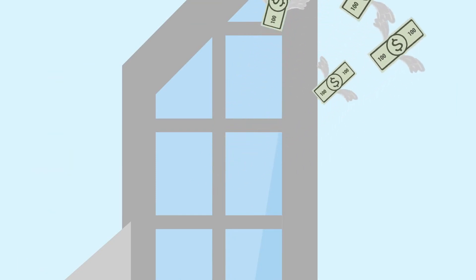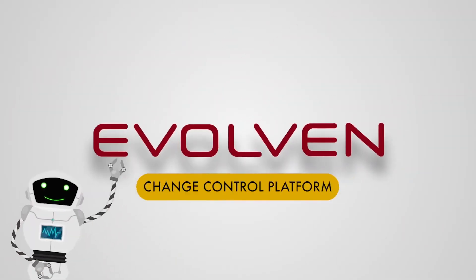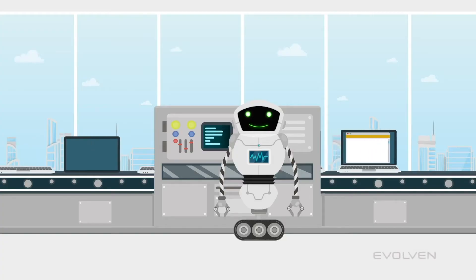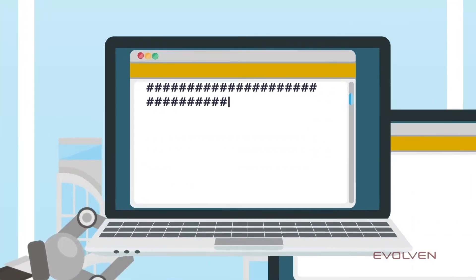Evolvin's change control platform automatically detects actual granular changes across the entire enterprise cloud.